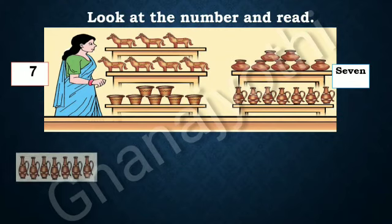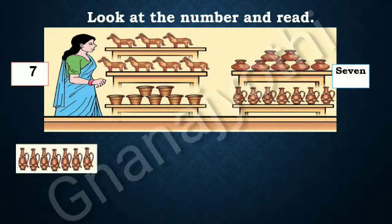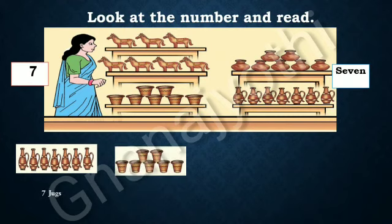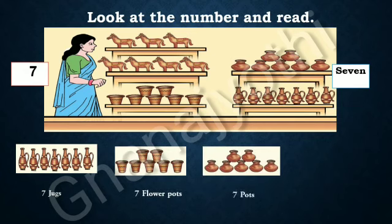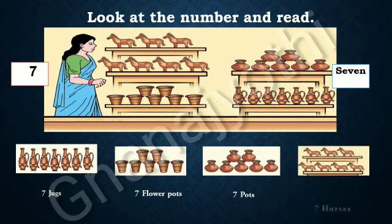In this picture, we can see 7 juts, 7 flower pots, 7 pots and 7 horses. In this picture, we can see the things which are 7 in number.